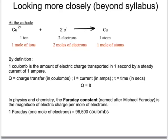One coulomb is the amount of electric charge transported in one second by one amp. So the number of coulombs, labelled Q, is the number of amps I times the number of seconds T. So if we want to double the number of moles of electrons, or the number of Faradays, we would have to either double the current or double the time.